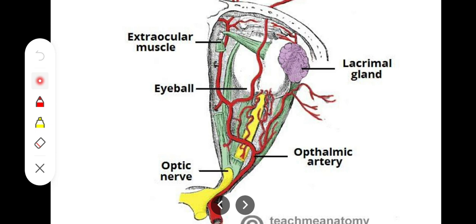Further relations include: the nasal ciliary nerve crossing the optic nerve; the nerve to medial rectus passing beneath it; and laterally the ciliary ganglion is situated between the optic nerve and lateral rectus muscle. The orbital fat surrounding the optic nerve also contains ciliary vessels and nerves. These are all the key relations of the optic nerve within the orbit.